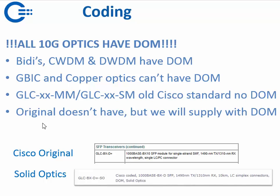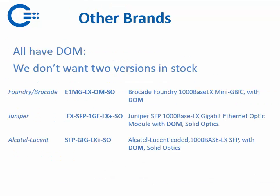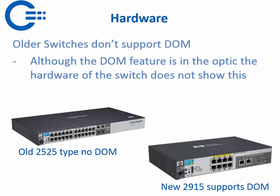Original optics most of the time don't have DOM. For example, this GLC-BXD doesn't have it, but the Solid Optics version has it. All our optics as standard come with DOM if we can provide it with DOM. Also for other brands — here for example Foundry/Brocade — we always deliver with the DOM feature. Same for Juniper and Octalucent: we always have the DOM feature included.